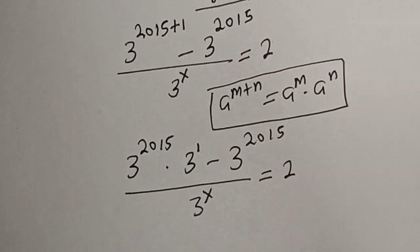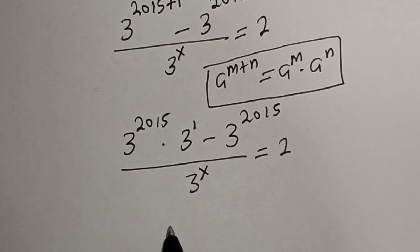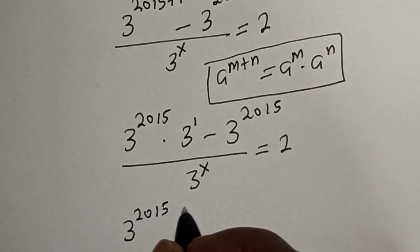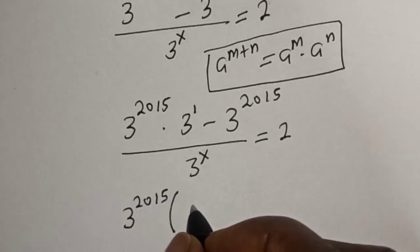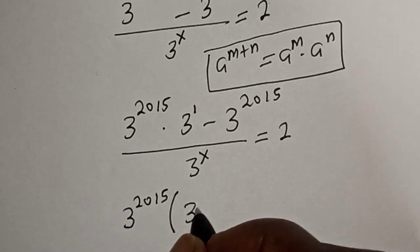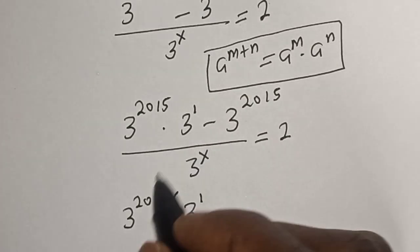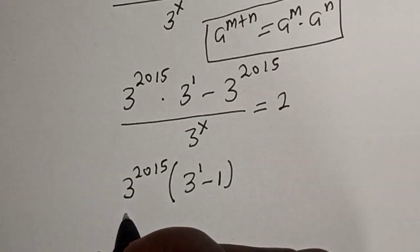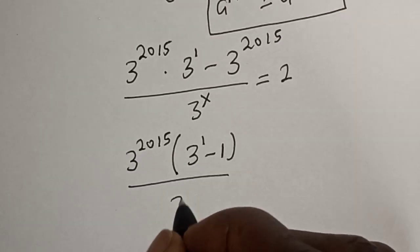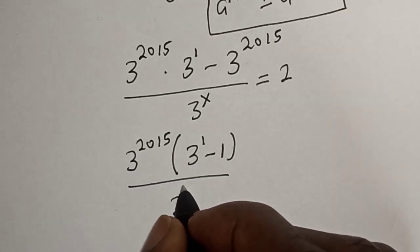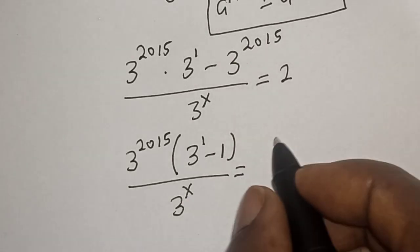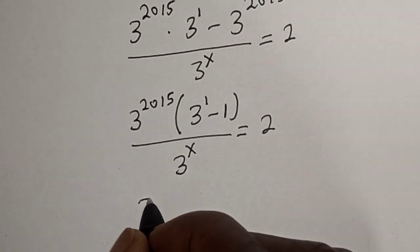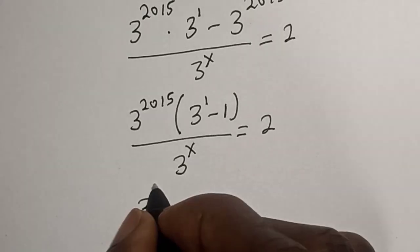Now 3 raised to power 2015 is common — let's bring it out. We have 3 raised to power 2015 bracket 3 raised to power 1, divided by this, minus 1, over 3 raised to power s, is equal to 2.